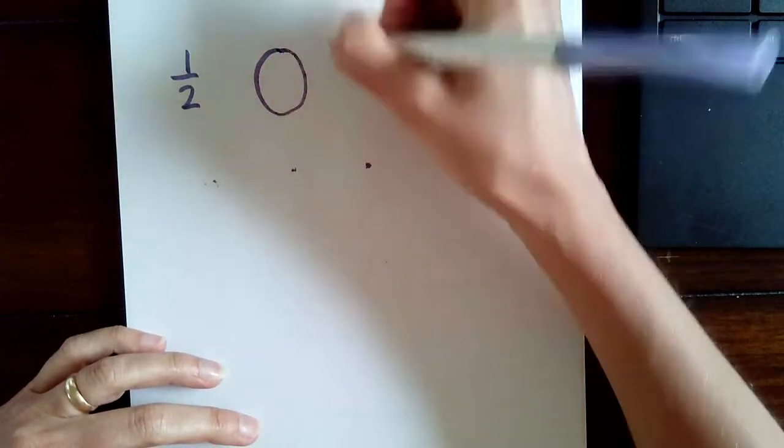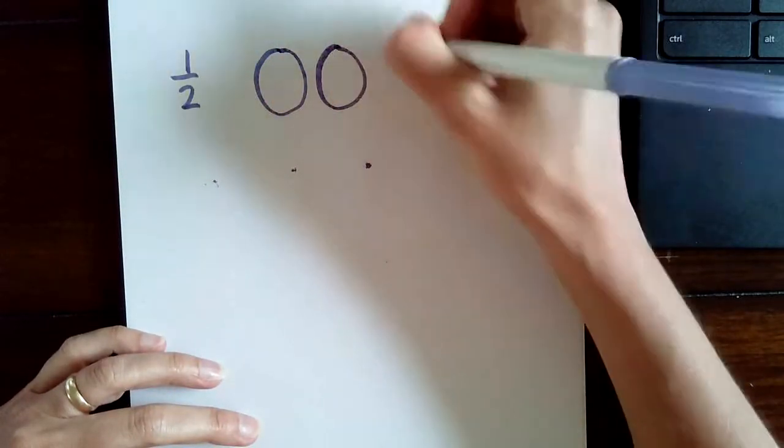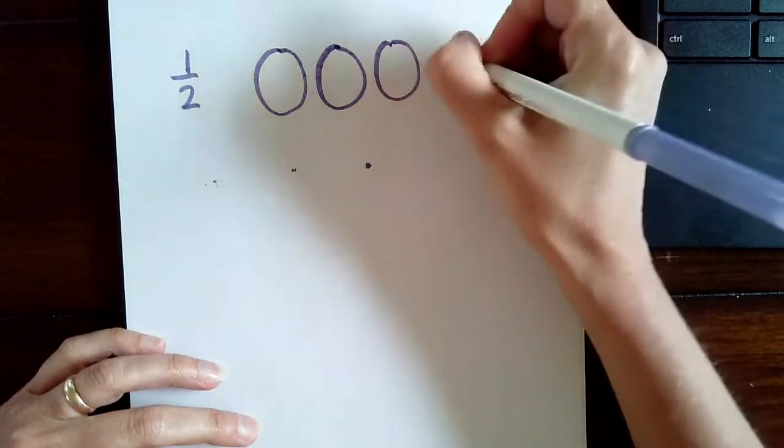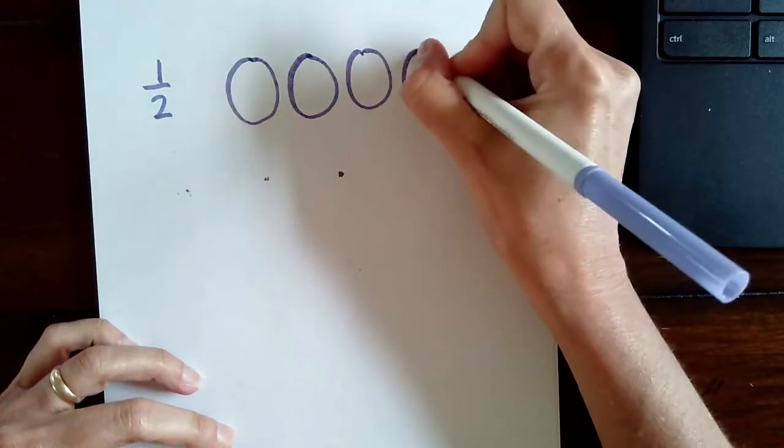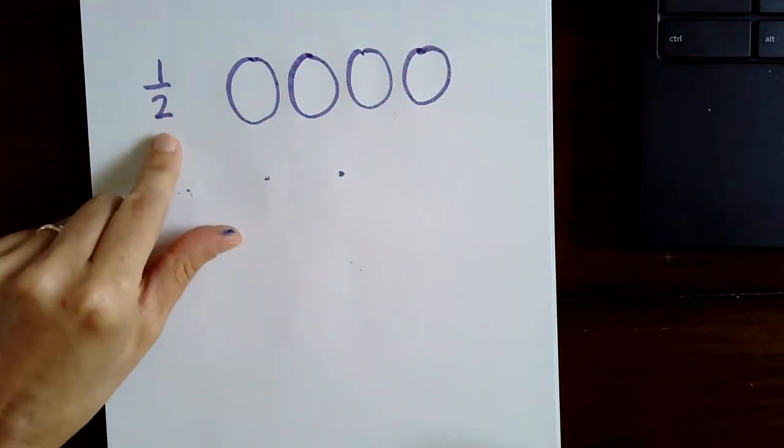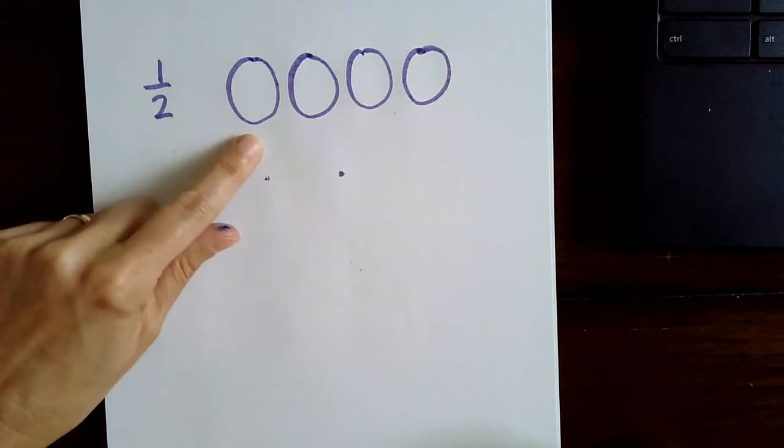I'm just going to do circles, try to make them the same. Four wholes. And we know that we're going to draw four wholes. And we know that we're going to divide each circle in half.